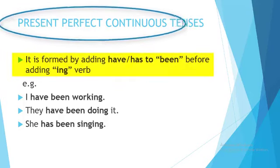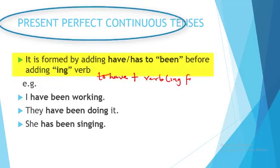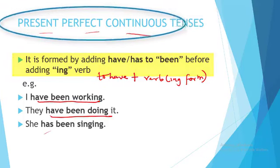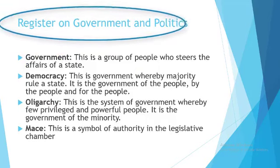Then we have the present perfect continuous tense. For this you use the verb 'to have' plus the verb in -ing form. For instance: 'I have been working.' 'They have been doing it.' 'She has been singing.' 'They have been reading.' These are all examples of the present perfect continuous tense.